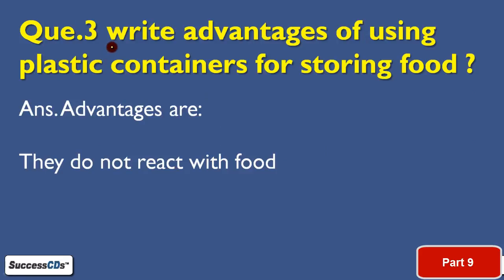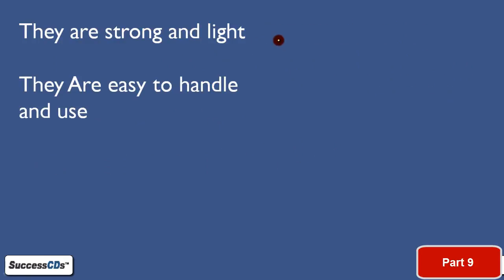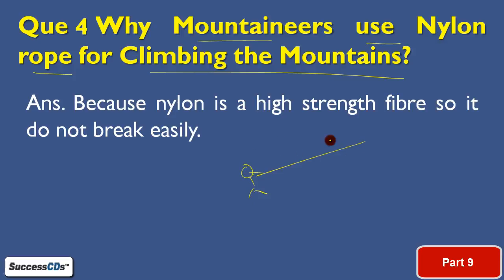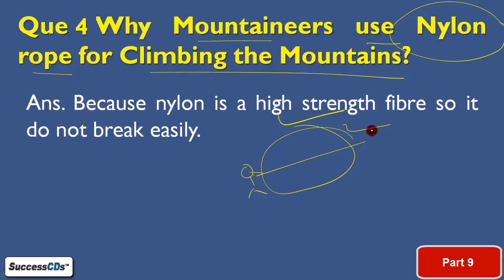Third question: write advantages of using plastic containers for storing food. Advantages are: they do not react with the food, they are strong and light, and easy to handle and use. Next question: why do mountaineers use nylon rope for climbing mountains? Mountaineers make use of rope, and this rope is mostly made of nylon. Because nylon is a high-strength fiber — it doesn't break easily and can bear heavy weight. When they are stuck, the whole weight is on the rope, but it doesn't break because it is high-strength, helping mountaineers to climb.